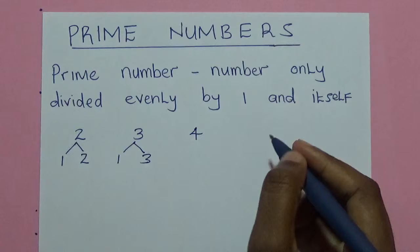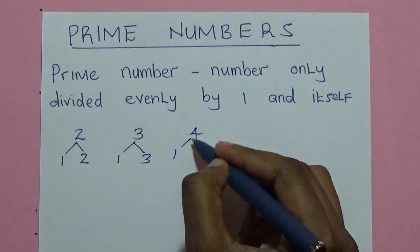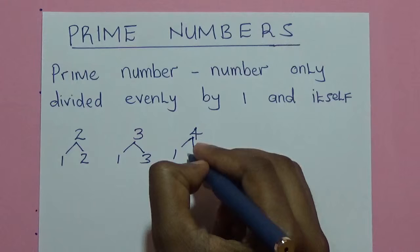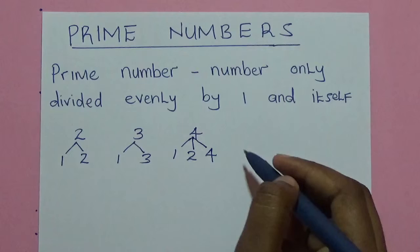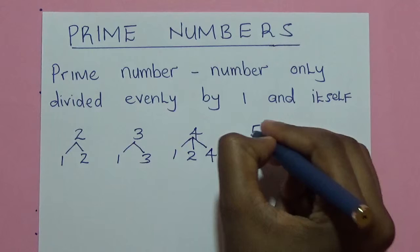The next number is number 4. Number 4 can be divided by 1, because 4 divided by 1 will get 4. It can also be divided by 2 — 4 divided by 2 will be 2 — and it can also be divided by itself, which is 4, to get 1.